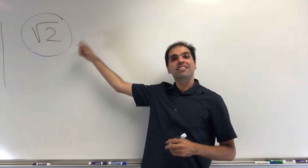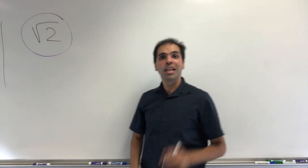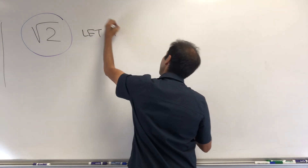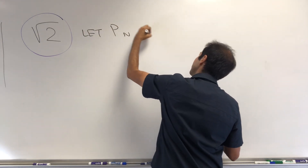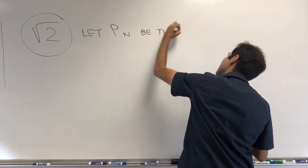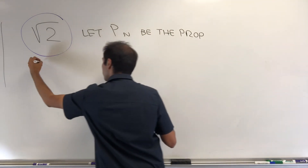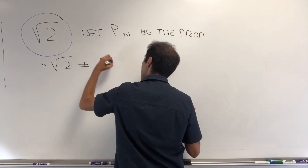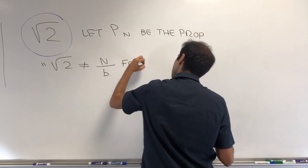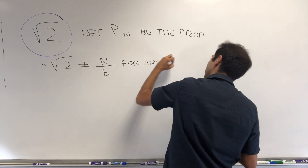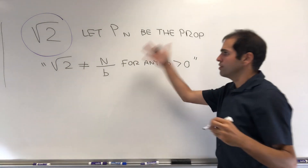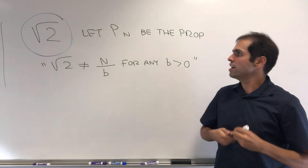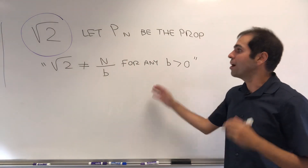In particular, let's show that square root of two is irrational by induction. Let Pn be the proposition that square root of two cannot be written in the form n over b for any positive b. Convince yourself that this would show that square root of two is irrational, at least assuming square root of two is positive.